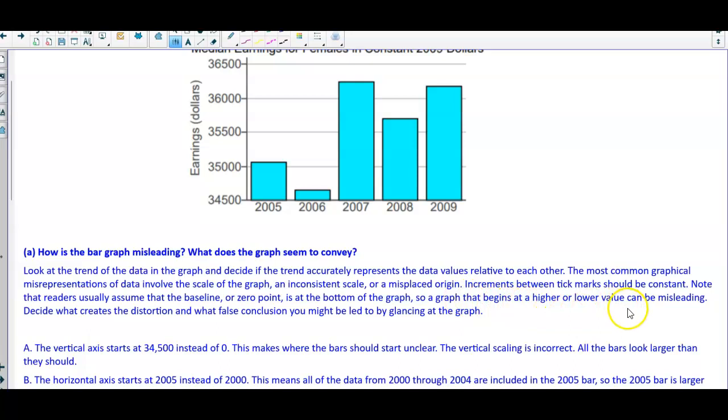Increments between tick marks should be constant. Note that readers usually assume that the baseline or zero point is at the bottom of the graph. So a graph that begins at a higher or lower value can be misleading.